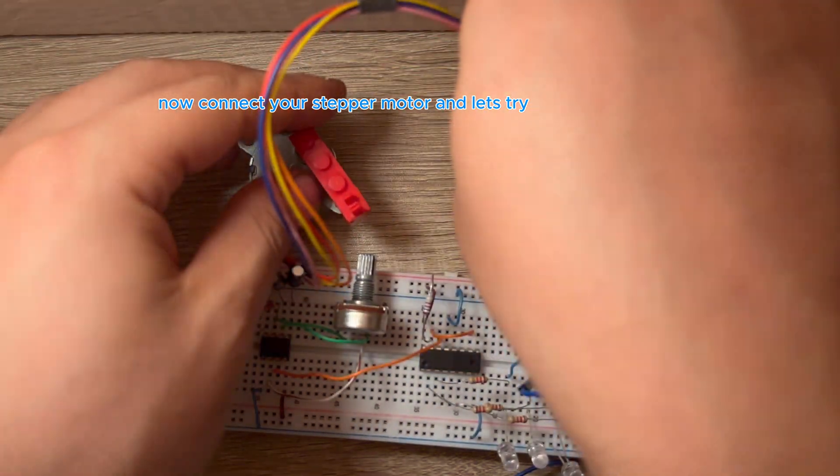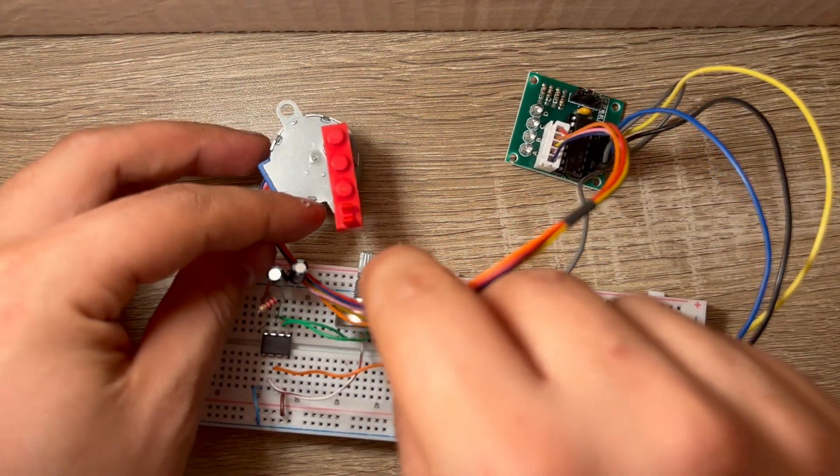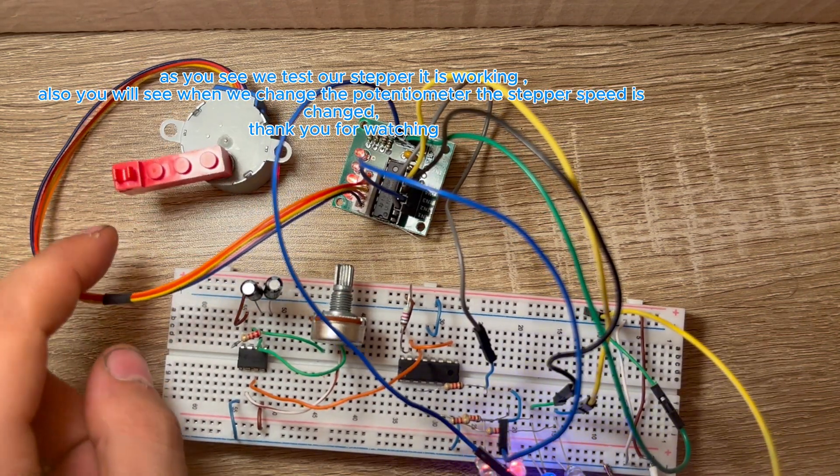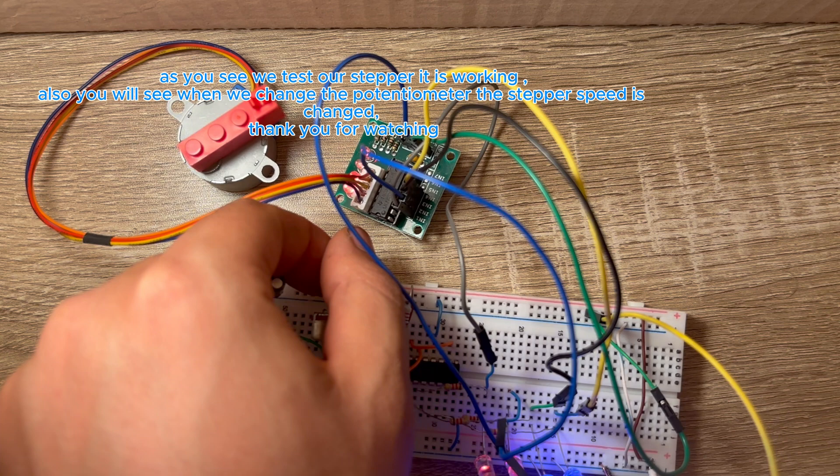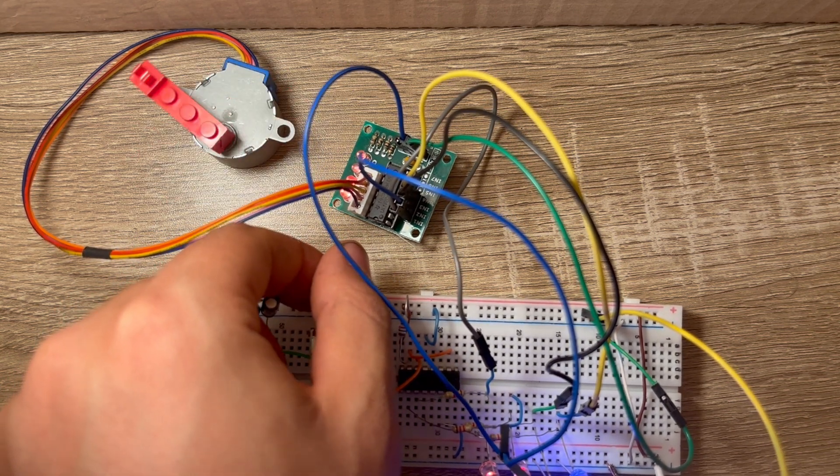Now connect your stepper motor and let's try. As you see, we test our stepper, it is working. Also you will see when we change the potentiometer, the stepper speed is changed. Thank you for watching.